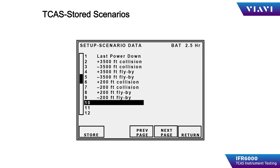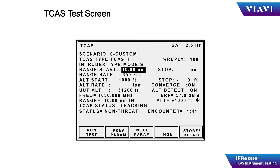There are three empty scenario slots to allow the operator to save and subsequently recall a custom setup. Once the TCAS is set up with a scenario, the TCAS in the aircraft is set up to operate as it normally would in flight. These setups would include satisfying weight on wheels, air ground switch in the airborne condition, landing gear in the retracted position, and radio altimeter. The operator presses the run test soft key to initiate the scenario.